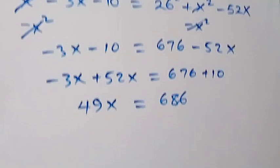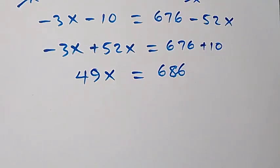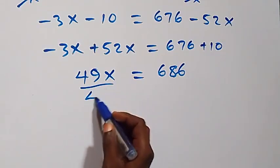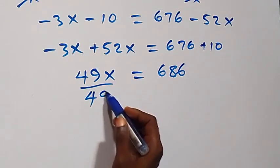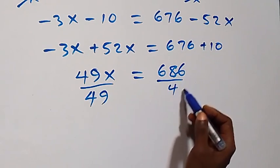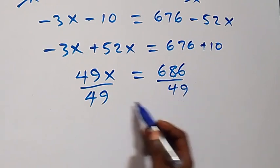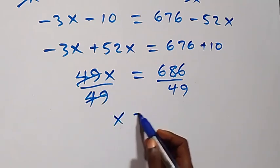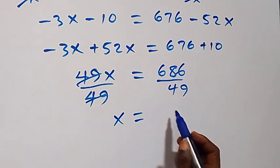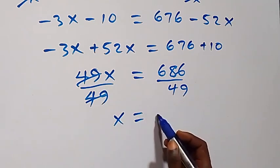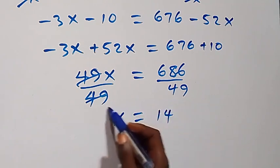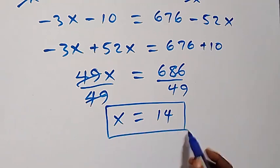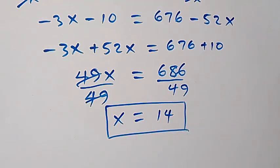We divide both sides by 49; the 49s cancel each other, and we have x equals 686 over 49, which equals 14. Therefore, the value of x in this given problem is equal to 14.